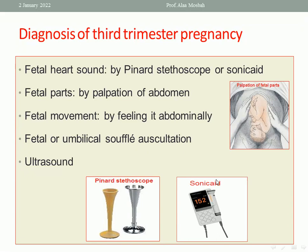During the third trimester, you can feel the fetal parts on abdominal examination. You can feel fetal movements and hear the fetal heart sounds by Pinard stethoscope or by Sonicaid. Also you can hear the umbilical souffle by auscultation. Ultrasound can detect the gestational age, the size of the baby, the expected date, estimated fetal weight, and also comment on the placenta, the amniotic fluid, and any abnormalities in the fetus or placenta.